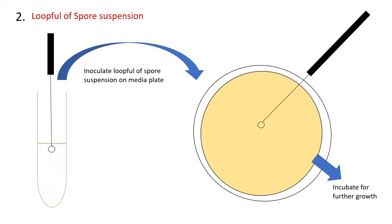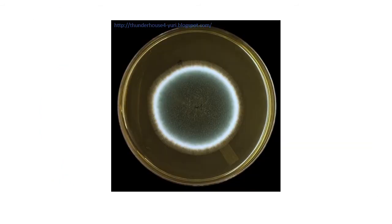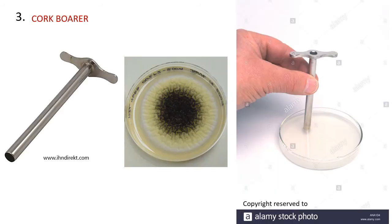Another method is using a loopful of spore suspension. Make a spore suspension and use a loopful of that to inoculate. In the case of spore suspension, you eliminate the problem of spores scattering on your media plate. You can get a beautiful plate — as shown here, this is an Aspergillus fungal plate belonging to genus Aspergillus. This is something you can add to your research paper, article, or thesis.